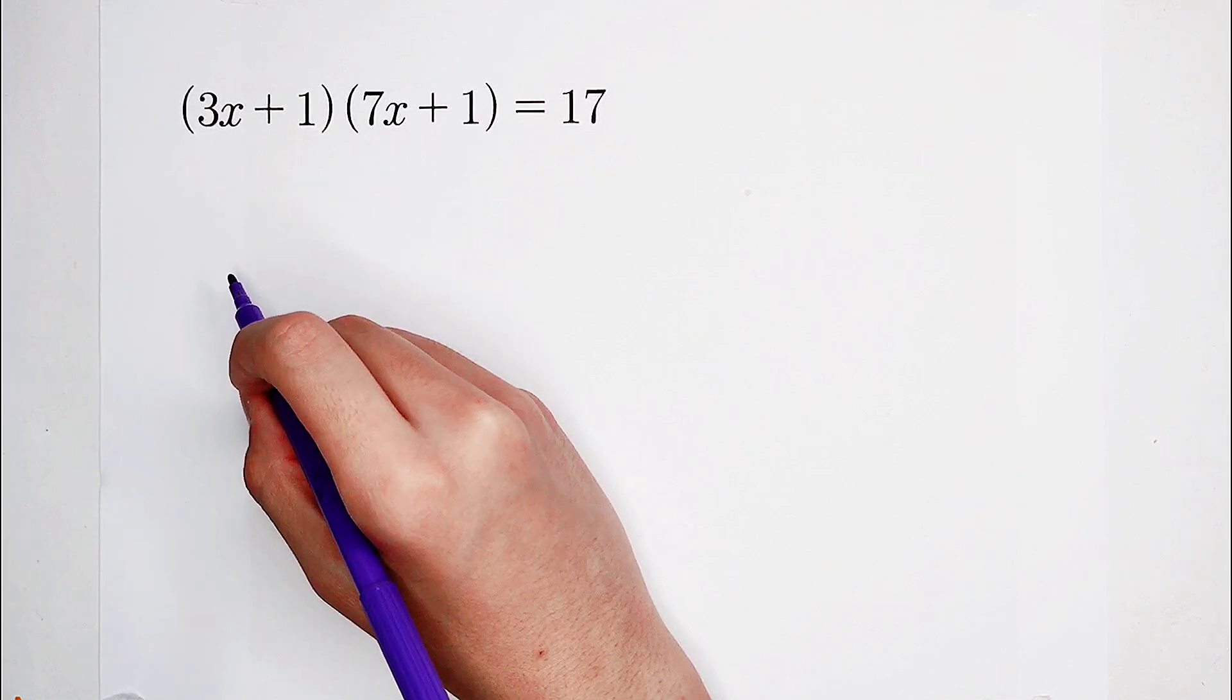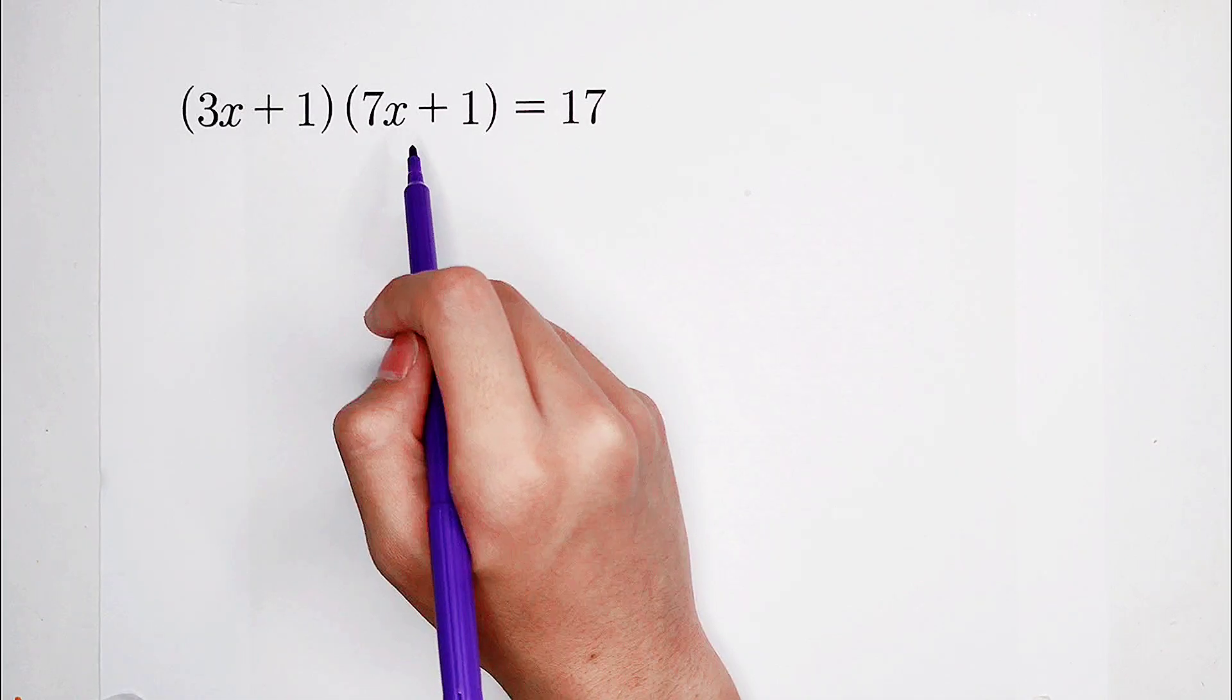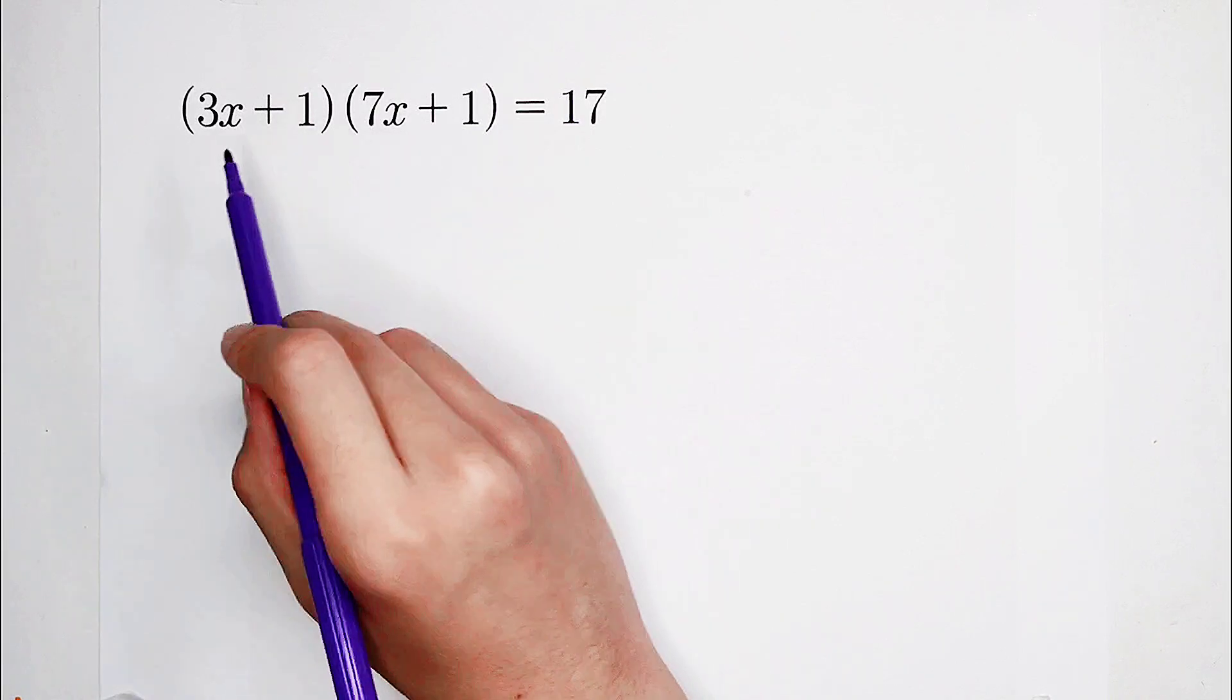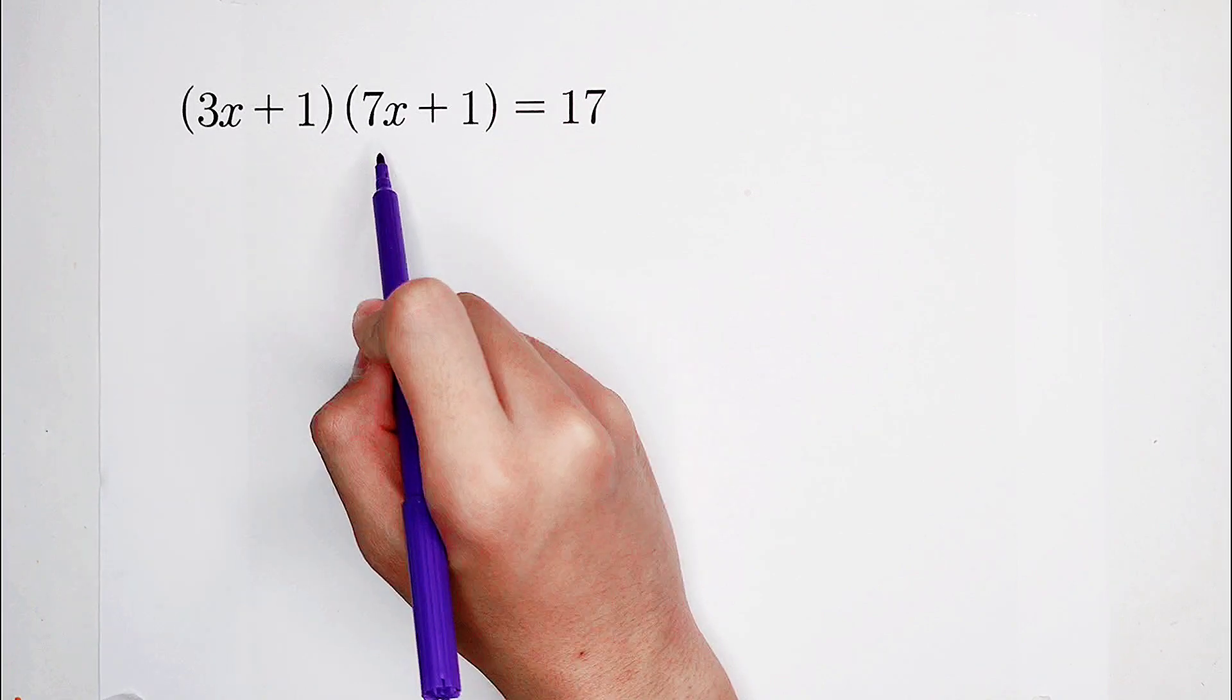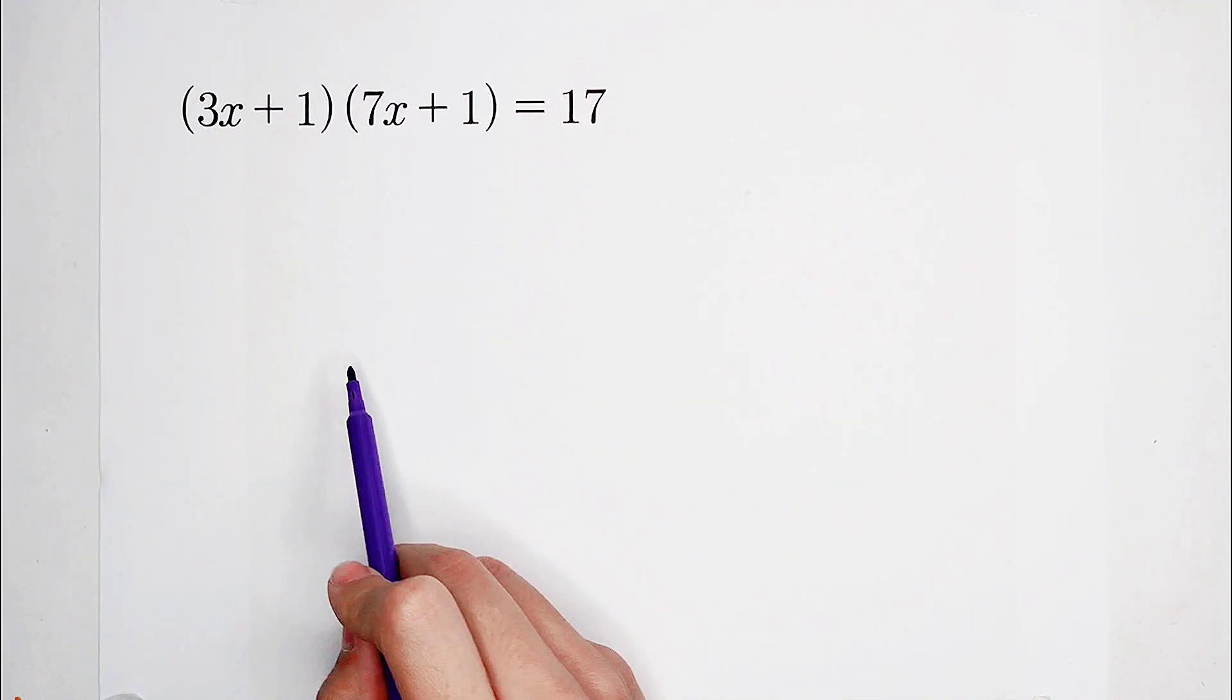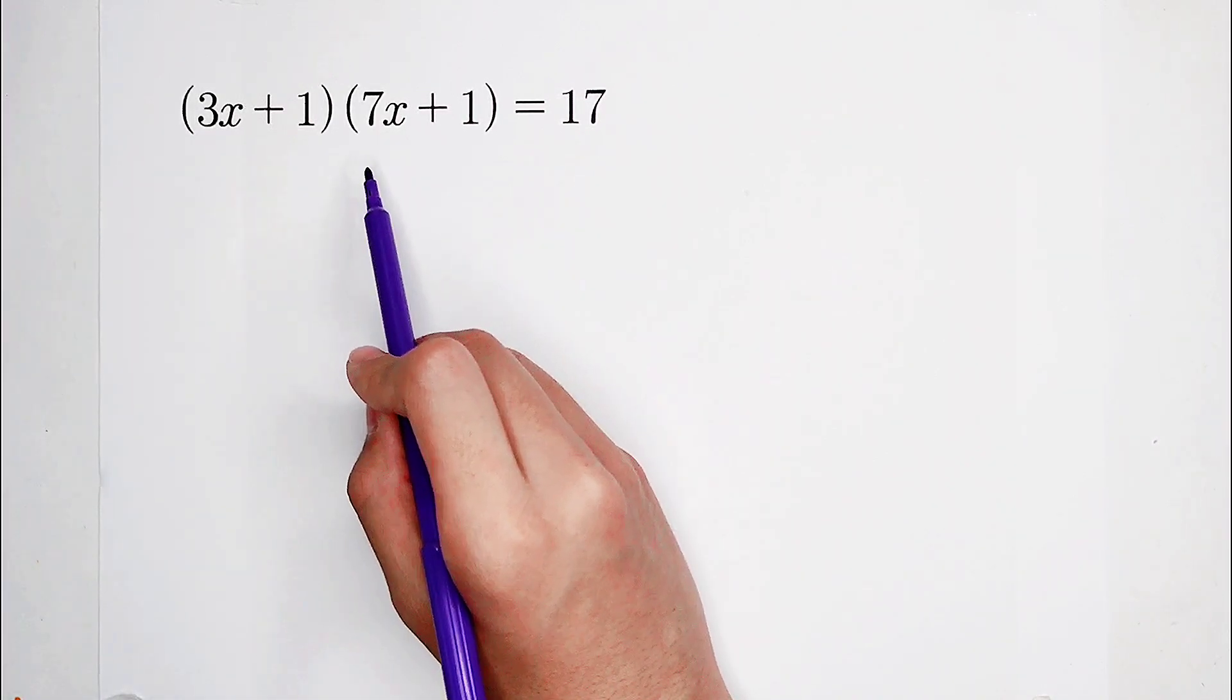Nearly, we hope that the coefficients of x of each of the factors are equal. However, in this case, the coefficients of x are not equal. They are 3 and 7. 3 does not equal 7. So now, what should we do? Of course, we can do a small changement and let the coefficients be equal.